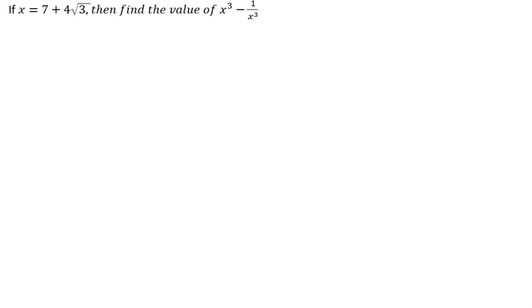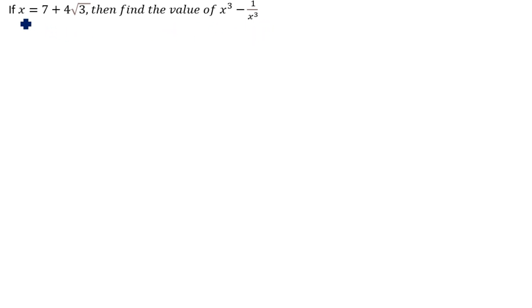Hi friends, welcome to my channel Excellent Ideas in Education. Today we are going to learn about real numbers, Class 9 chapter. This is a very important problem: if x is equal to 7 plus 4 root 3, then find the value of x cube minus 1 by x cube. Given: x is equal to 7 plus 4 root 3.